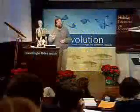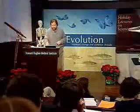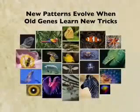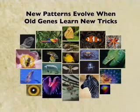So what's the main message here from fruit flies and butterflies? The main message is that new patterns evolve when old genes learn new tricks. Very old genes. The gene I just showed you we know is more than 500 million years old and possessed by most members of the animal kingdom. It has some very old jobs, for example, building appendages.